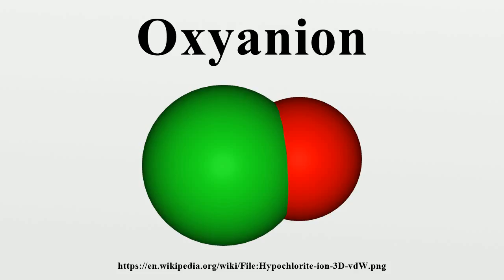The phosphonate ion PO3^3- is a strong base, and so always carries at least one proton. In this case the proton is attached directly to the phosphorus atom with the structure HPO3^2-. In forming this ion, the phosphonate ion is behaving as a Lewis base and donating a pair of electrons to the Lewis acid H+. As mentioned above, a condensation reaction is also an acid-base reaction.